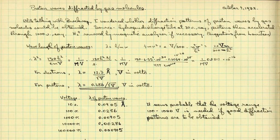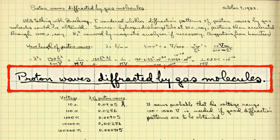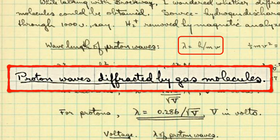Here's another cool page from October of 1932. At the top: 'Protein waves diffracted by gas molecules.' He was thinking about the de Broglie relation — there it is, right there: lambda equals h over mv. Same as us. He wasn't doing too many fancy things, just some basic calculations.